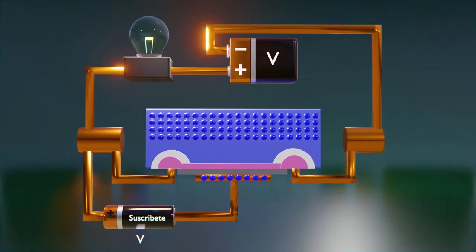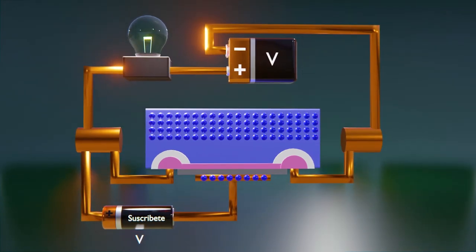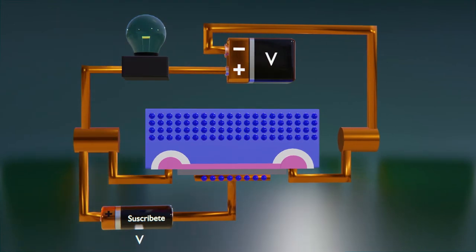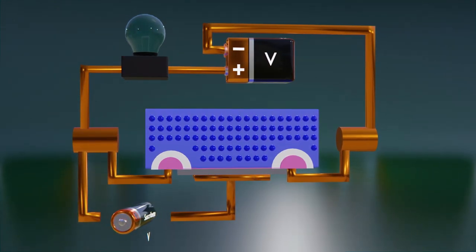The operation is simple. If the gate is activated the transistor lets the current pass between the source and the drain, if it is not activated, no current passes.